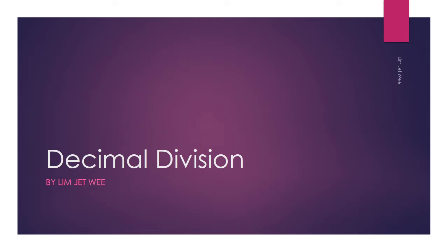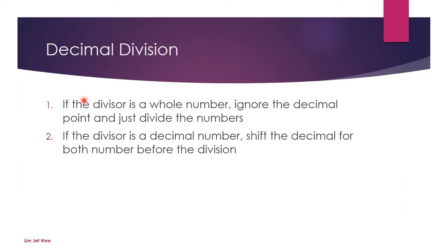We are now at decimal division, which is the last section of our decimal number unit. In decimal division, there are two rules to remember. If the divisor is a whole number, which means the number